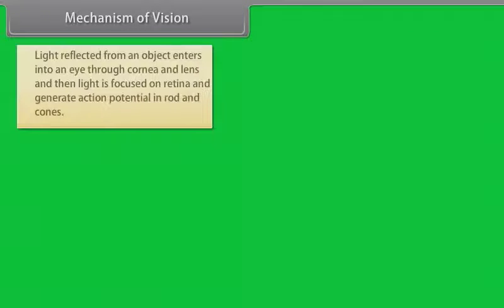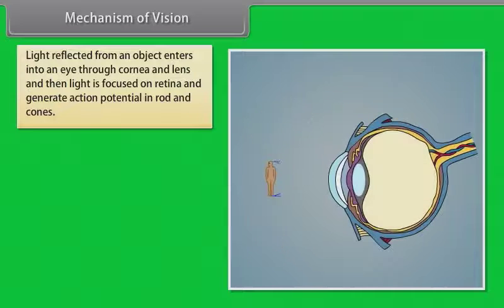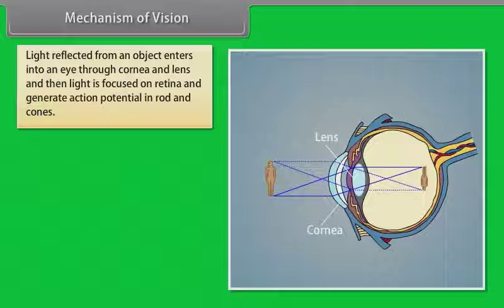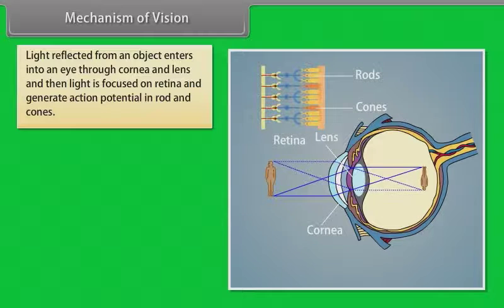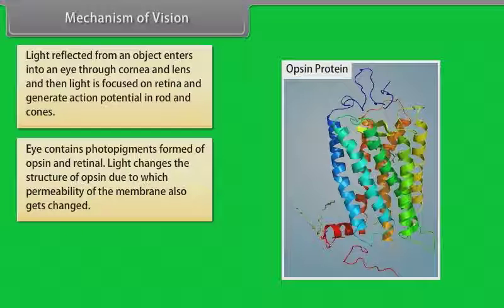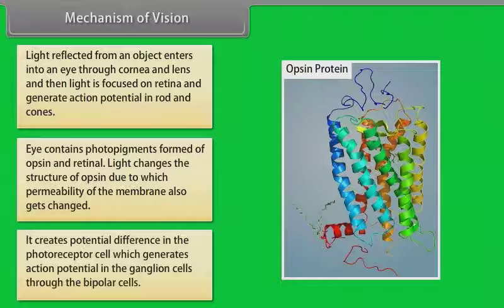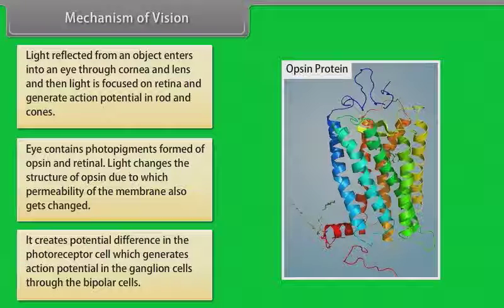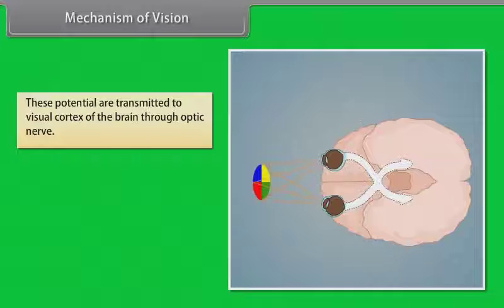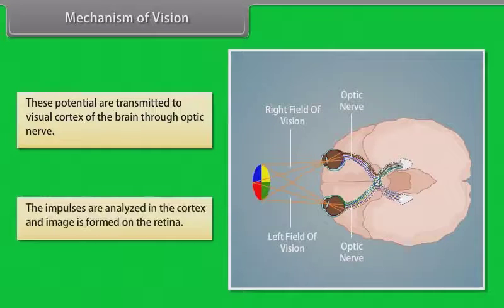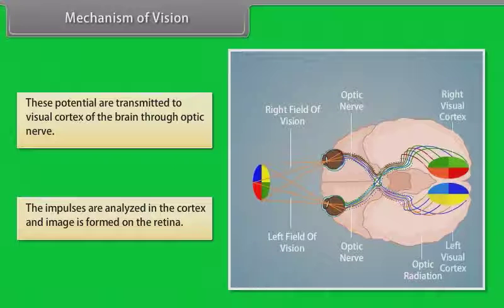Light reflected from an object enters the eye through the cornea and lens, and then the light is focused on the retina, generating action potentials in rods and cones. The eye contains photopigments formed of opsin and retinal. Light changes the structure of opsin, due to which permeability of the membrane also changes. This creates a potential difference in the photoreceptor cell which generates action potentials in ganglion cells through the bipolar cells. These potentials are transmitted to the visual cortex of the brain through the optic nerve, where impulses are analysed and the image is formed.